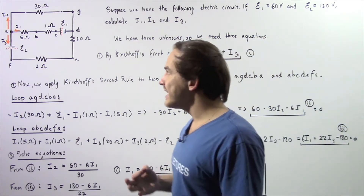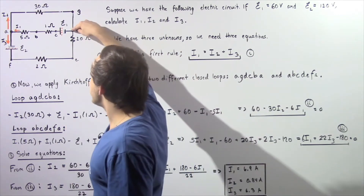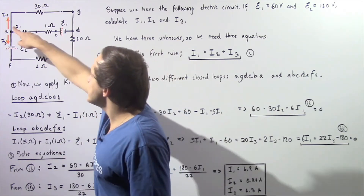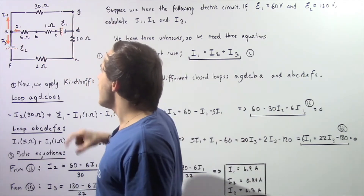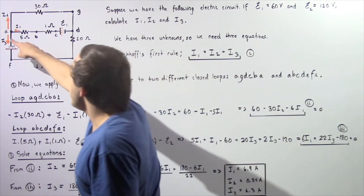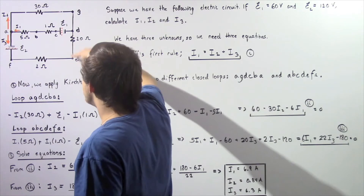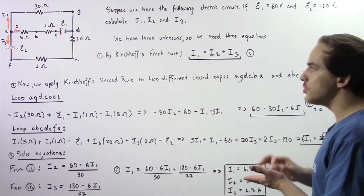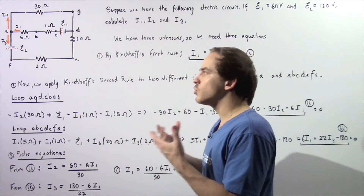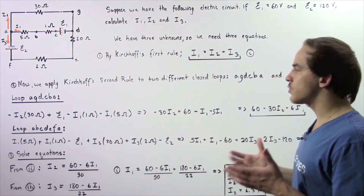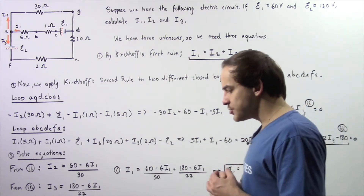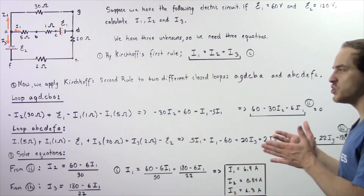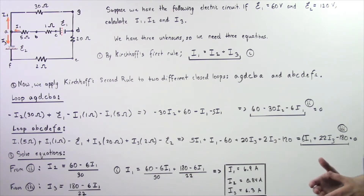Electric current I1 is the current that passes through the middle wire, electric current I2 is the current that passes through the upper wire, and electric current I3 is the current that passes through the lower wire. We have three different unknowns, so we need three equations. One equation will come from Kirchhoff's first rule, and the other two from Kirchhoff's second rule.